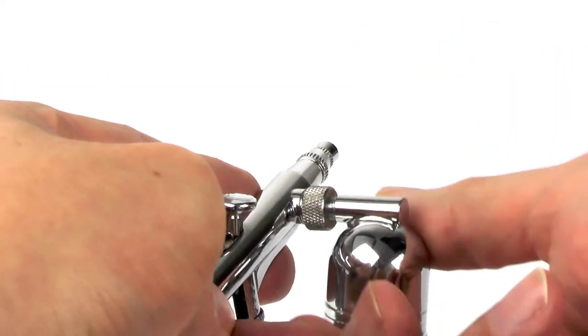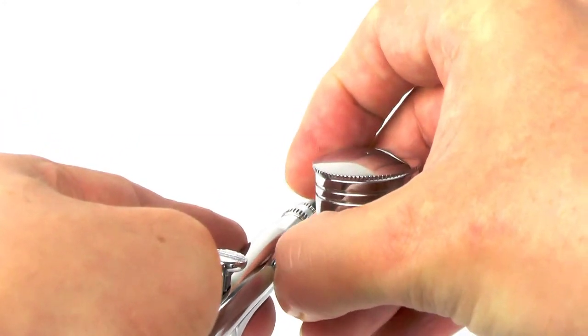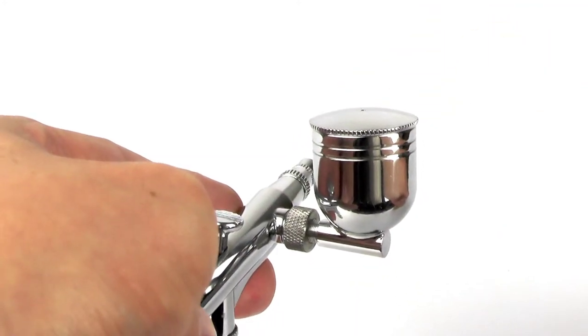Screw the paint cup in until it won't screw any further, then back it off and then tighten the locking nut against the thread of the airbrush. And that's it, fixed.